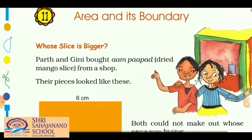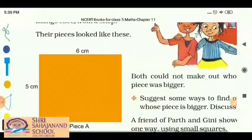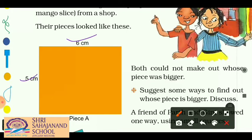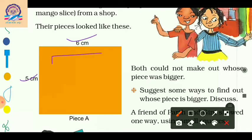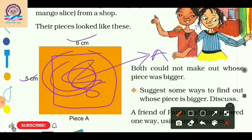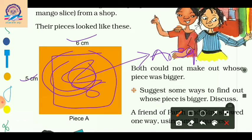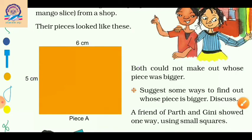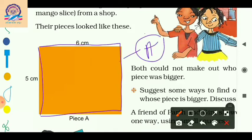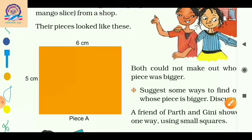Let's summarize the terms area and perimeter. Here we have a rectangular shape with dimensions 6 centimeter and 5 centimeter. This shape is completely filled with orange color, and this space is known as its area. In a sentence: the occupied space by any flat surface is known as its area. The length of the boundary of a shape is known as its perimeter.